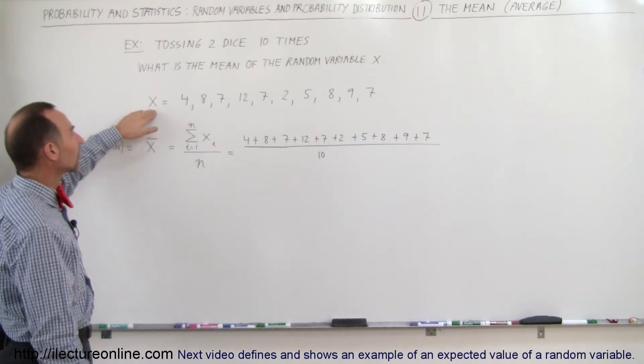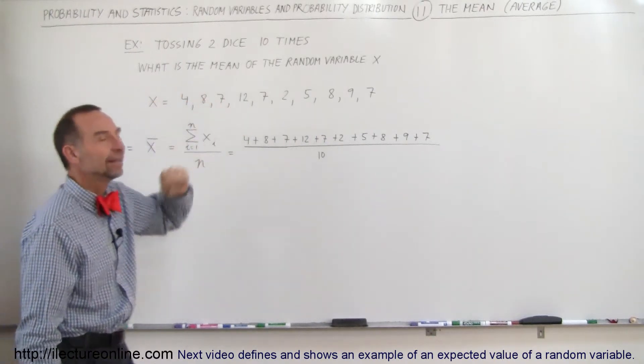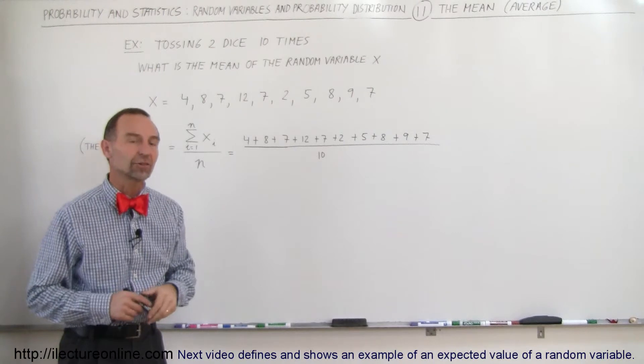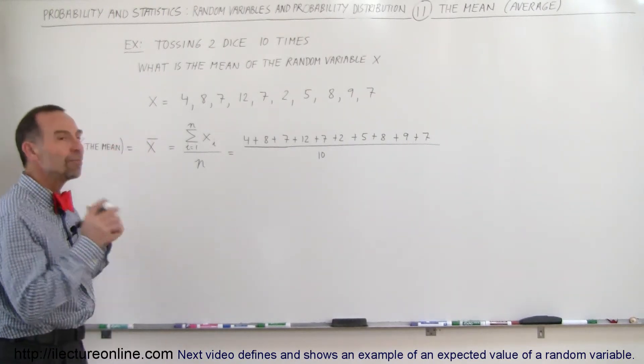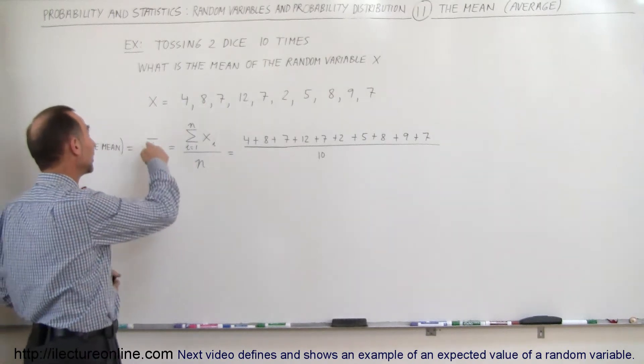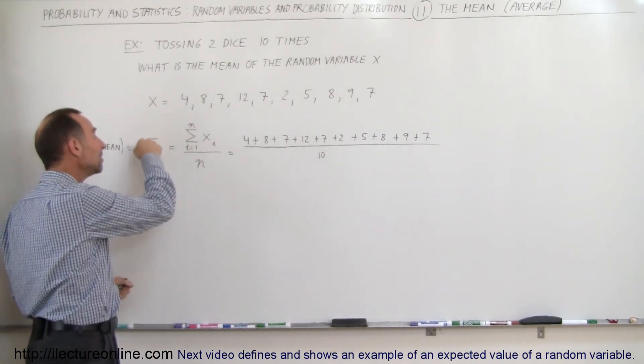So the random variable X will take on these ten different values on those ten tosses. So what is the average value for X? What is the mean? And the way we write that is we write the variable X with a little bar on top of it. That means the average.